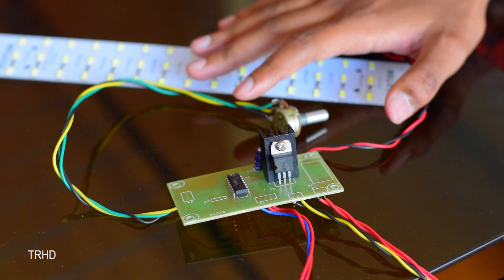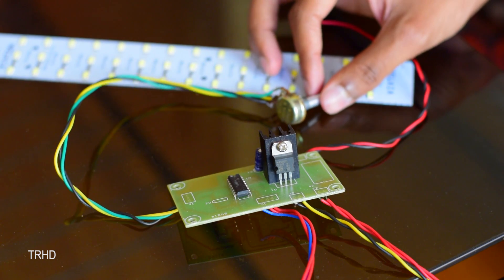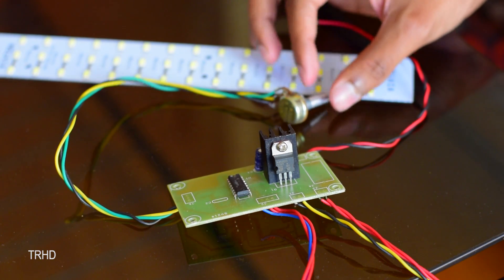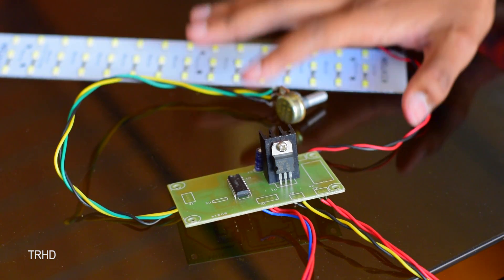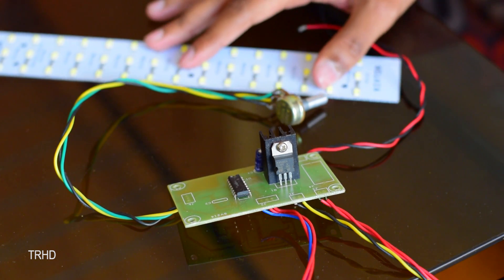It uses an SG3524 IC, a PNP transistor and a potentiometer. The total cost of this circuit is less than $1 so it is very cheap to make. If you don't want to use this brightness control circuit you can directly connect the power supply to the LED strip.